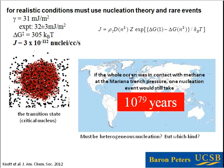This rate is effectively zero. To put it in perspective: if the entire ocean were in contact with methane at the pressure of the Mariana Trench at 273 Kelvin, a single nucleation event would still take 10^79 years. Even if classical nucleation theory makes errors on the order of 10^20 to 10^30, changing the exponent by 30 still leaves an astronomically long time. It is basically impossible for this to be happening by any homogeneous nucleation mechanism. So it must be heterogeneous nucleation — which is a very difficult question. Many people are now working to understand what kind of heterogeneous nucleation this could be, looking at clay surfaces, graphite surfaces, and things of that sort.